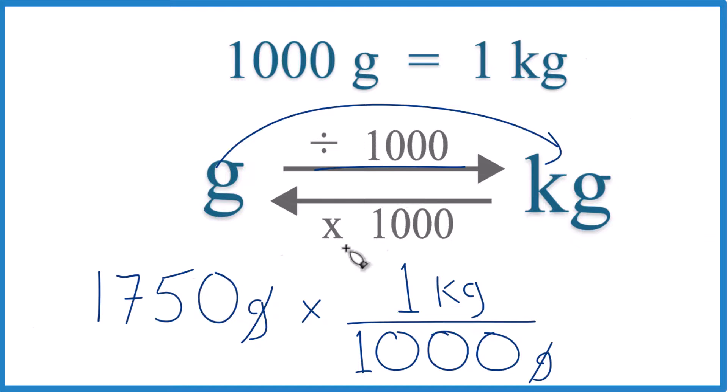1,750 times 1, that's 1,750 kilograms, divided by 1,000, 1.75 kilograms, just like we found before.